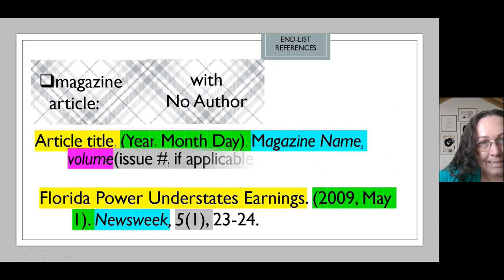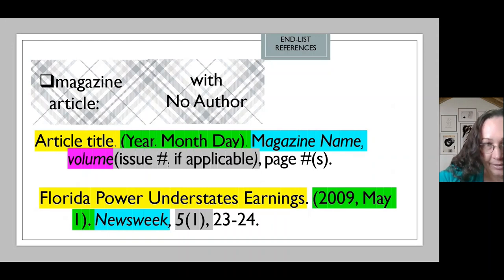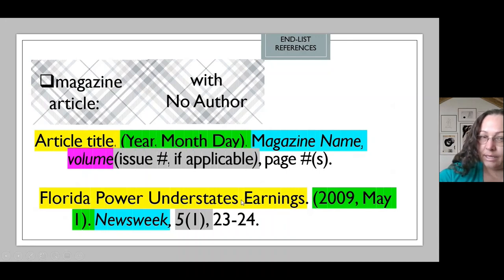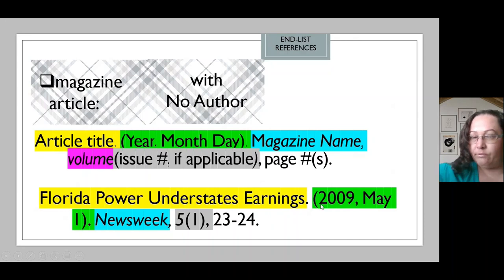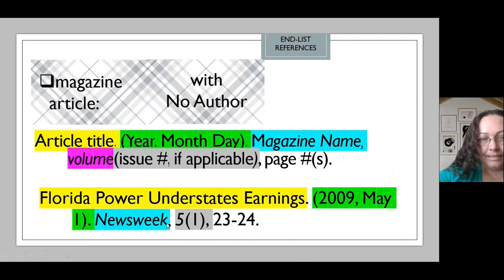What happens if we have an article published in a magazine, however, the article has no author? In those cases, we start with the title of the article. Remember, articles are not major titles, therefore they are not going to be italicized. So: title of the article, period. Then all the information is going to flow as previously: time of publication between parentheses, period. Italicized title of the magazine, comma, space, the volume of the magazine, open parentheses immediately, the issue, close parentheses, comma, the pages where this article appears in the magazine, period.